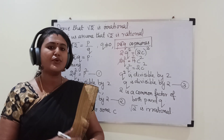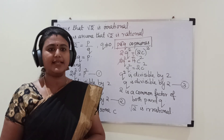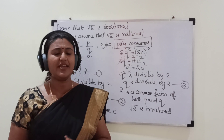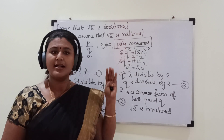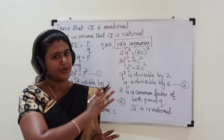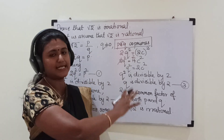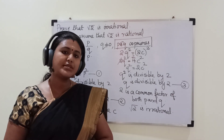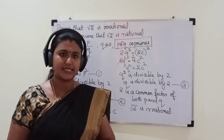In the same way, you can prove that other numbers like √3 and √5 are irrational by following the same steps.